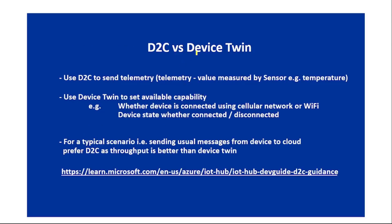For D2C versus device twin: use D2C to send telemetry — values measured by the sensor of the IoT device. Use device twin to set available capability, for example whether the device is connected via cellular or Wi-Fi, or whether the device state is connected or disconnected. For sending frequent telemetry messages, use D2C as its throughput is better than device twin.